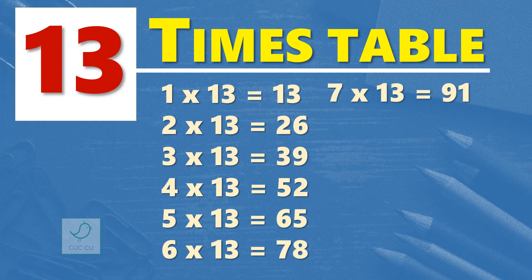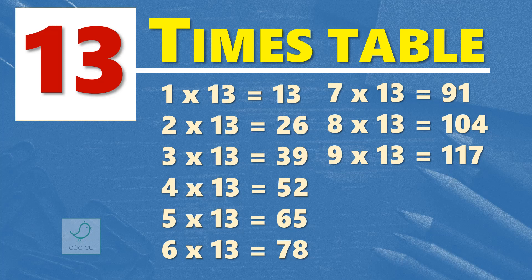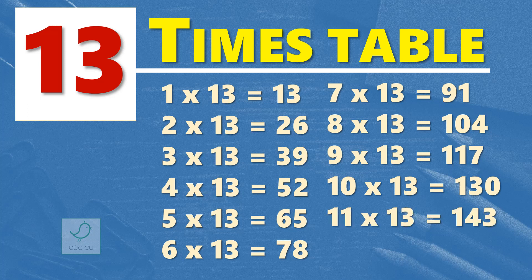7 times 13 are 91. 8 times 13 are 104. 9 times 13 are 117. 10 times 13 are 130. 11 times 13 are 143. 12 times 13 are 156.